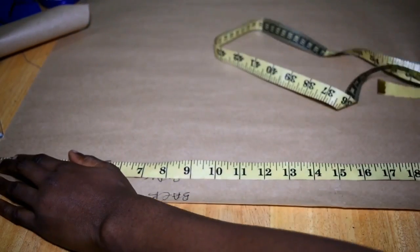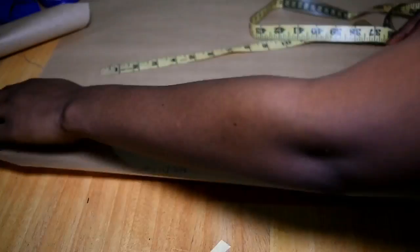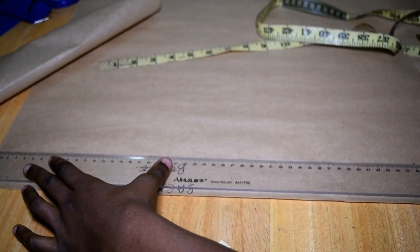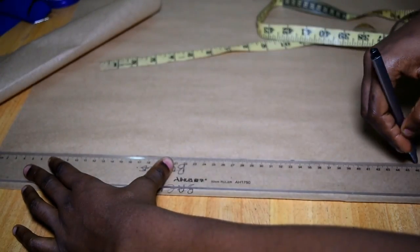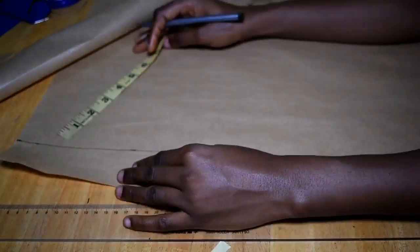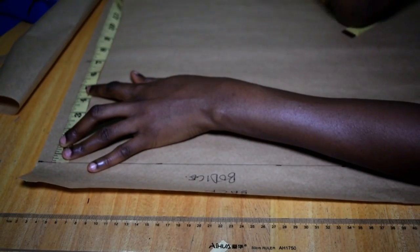And then I draw a straight line for me to know that yes, this is where I begin. So I'm going to begin the normal bodice construction.